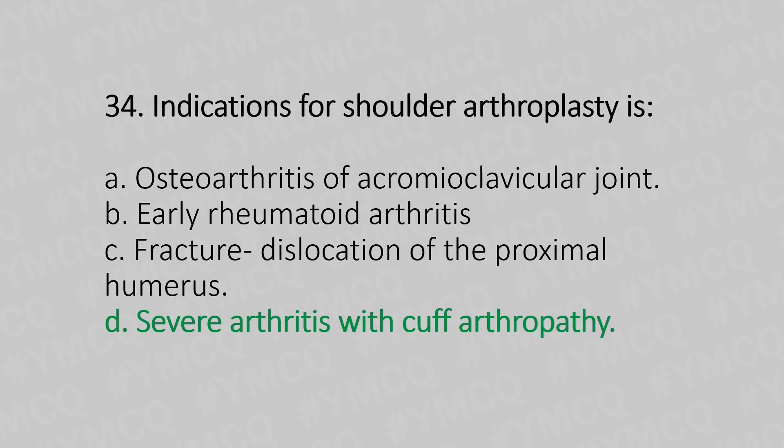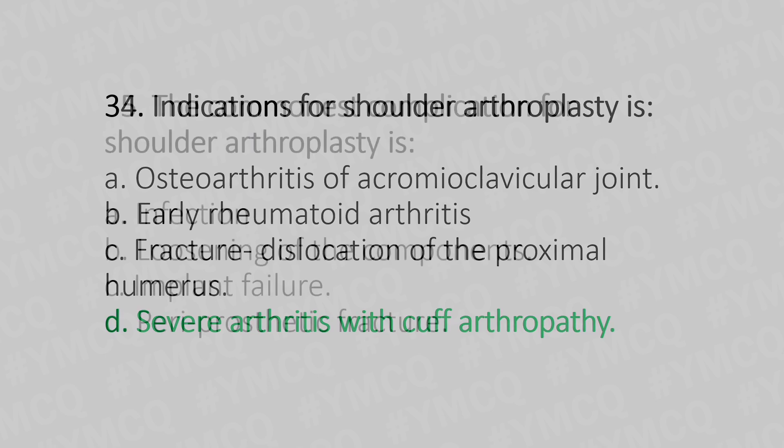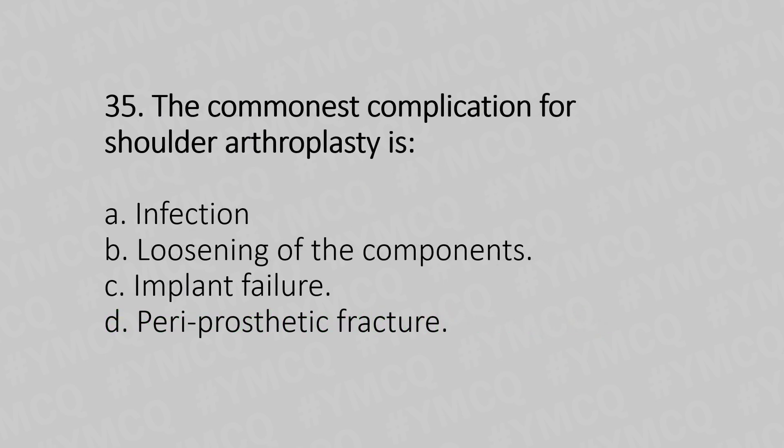Now let's move to question number 35. The commonest complication of shoulder arthroplasty is: Option A, infection. Option B, loosening of the components. Option C, implant failure. Option D, periprosthetic fracture. And the answer is Option B, loosening of the components.